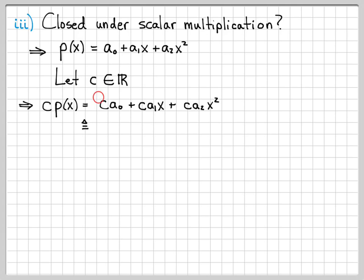And again, I can go ahead and define this as a new number, I'll call it d₀. And I can define ca₁ as d₁, and I can define ca₂ as d₂. And guess what this looks like? This looks like the general form of any arbitrary polynomial in P2 again, so this is an element in P2. This is the exact form that elements in P2 always have.